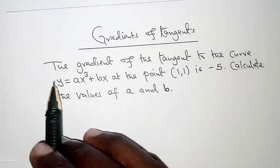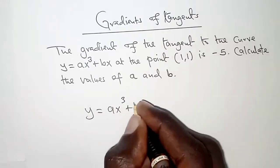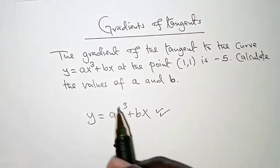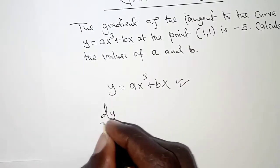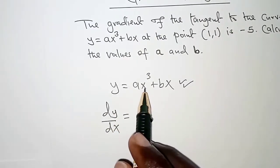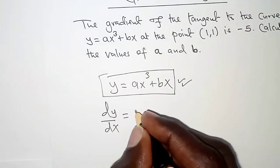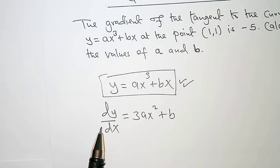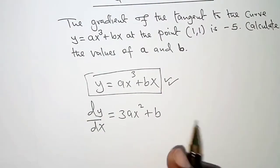In this question we are given the equation of the curve: y is equal to ax cubed plus bx. We are told that its gradient is negative 5. So we can determine the general equation for the gradient of that curve, also known as the gradient function, that is dy over dx. When we differentiate y equals ax cubed plus bx we get 3ax squared plus b.